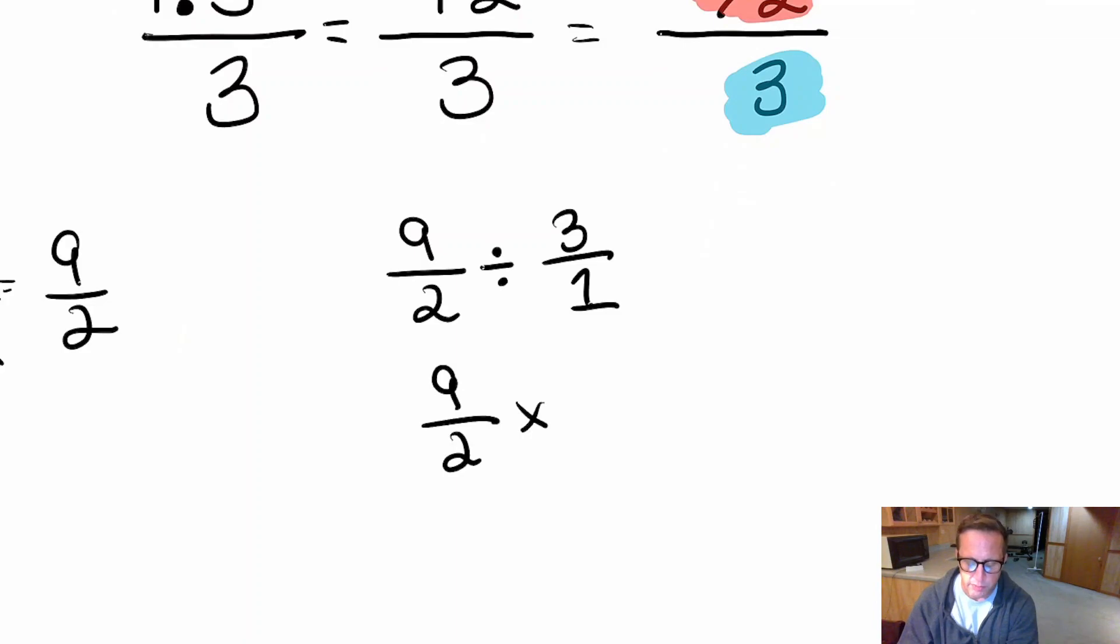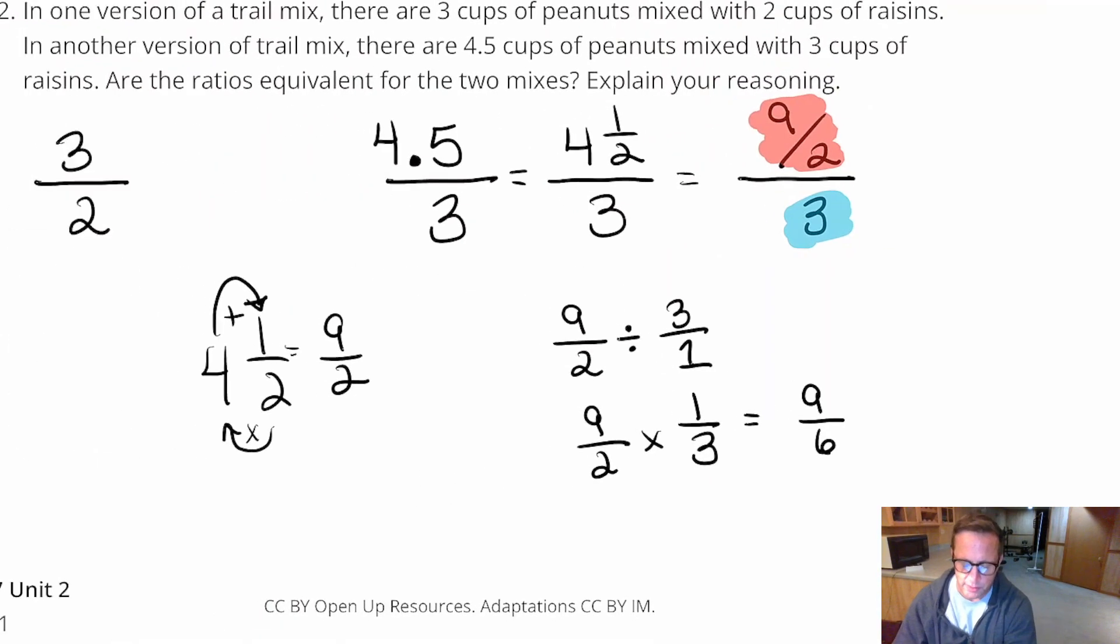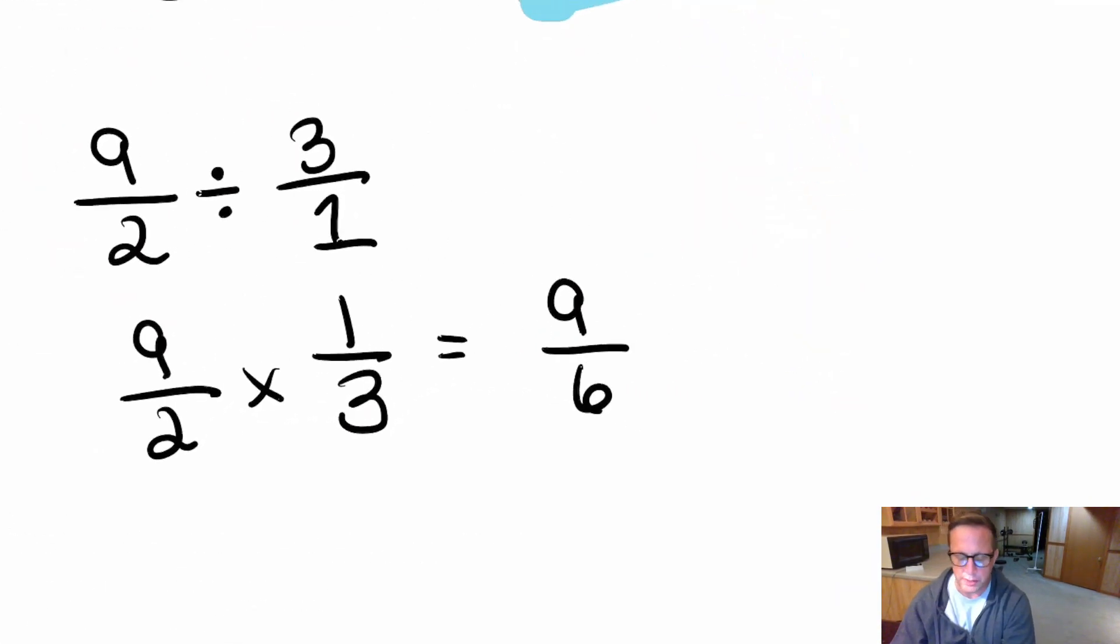And nine halves. You're going to keep nine halves the way it is. Change division into multiplication. And then flip this. That's one-third. And then you get nine over six. It's still not three over two. But wait. But wait. We can simplify this, can't we? We can simplify this. Nine and six both can be divided by three. And what do we end up with? We end up with three halves.